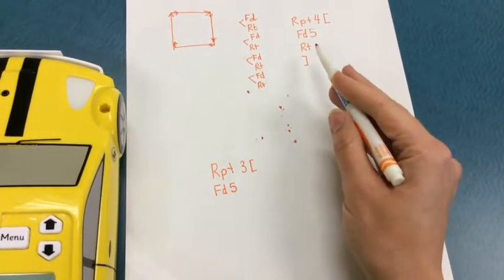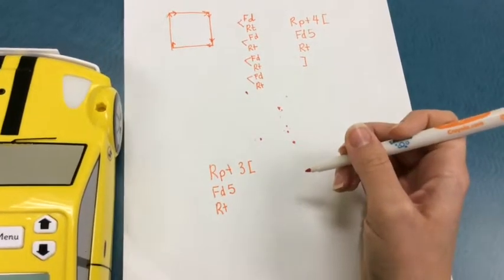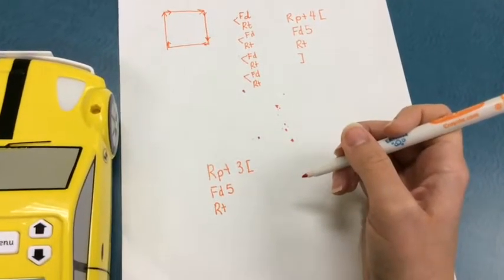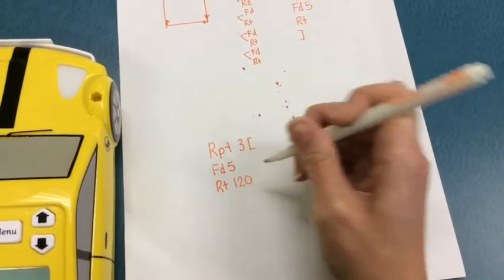We're going to continue to use right turn, so press right turn, but this time we don't want it just to do a regular 90 degree turn. We want it to do 120 degrees. So press 120.